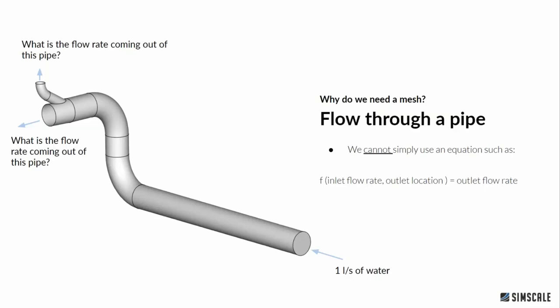Let's say we want to analyze flow in a pipe. We have a flow rate coming in and we're trying to evaluate how much water comes out of the upper pipe versus the main pipe. The bad news is we cannot use a simple analytical equation for this. Unfortunately, the laws of physics and the development of engineering simulation don't allow us to analytically solve this kind of problem. The flow is governed by different equations that at the moment cannot be solved analytically.